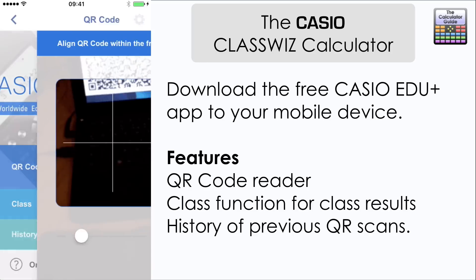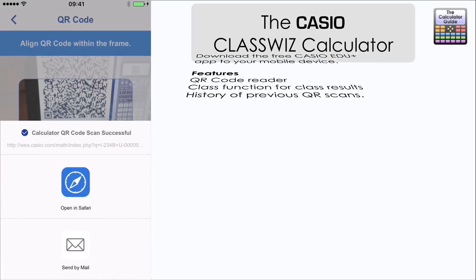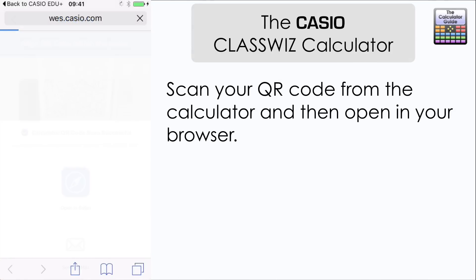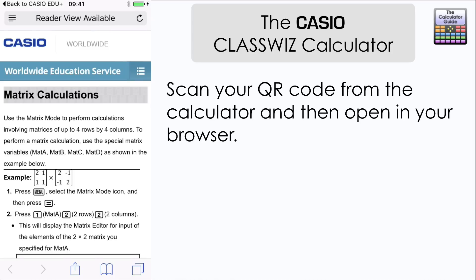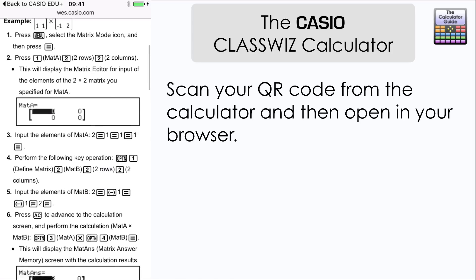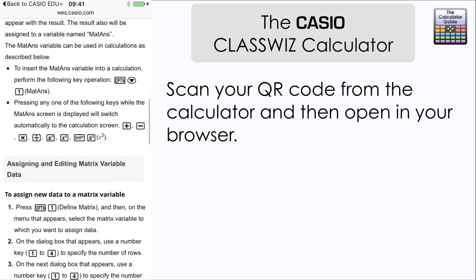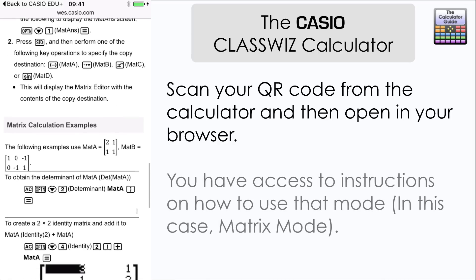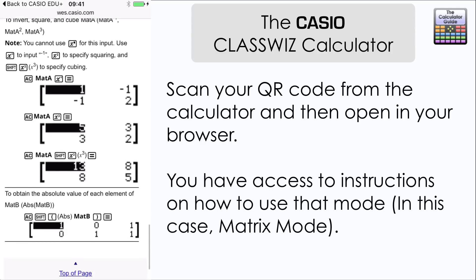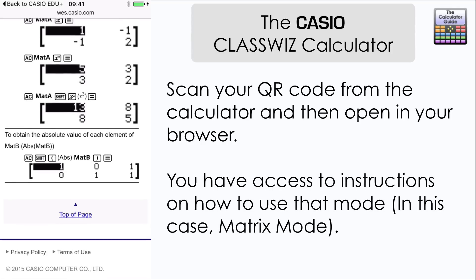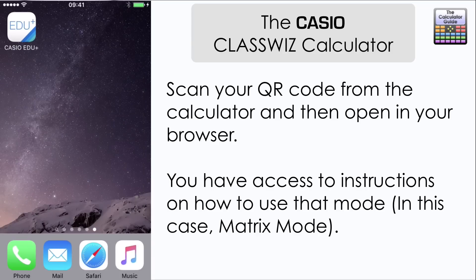But let's just select QR code. I'm going to scan the QR code that I produced from the calculator. I've made mine a little bit larger on the computer here. And what that produces on your mobile device is a list of instructions for that particular mode. So in our case here, for matrix mode. So very useful if we're uncertain about how to use a particular mode. We can go straight on a mobile device and have a look at some instructions there.